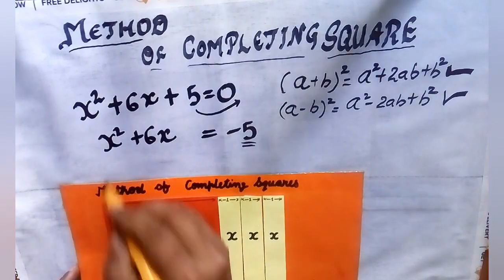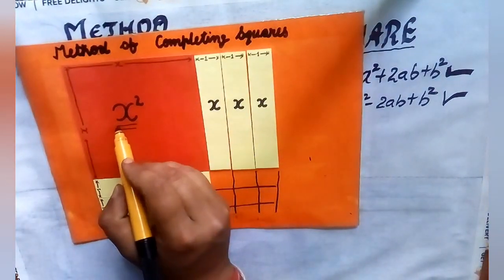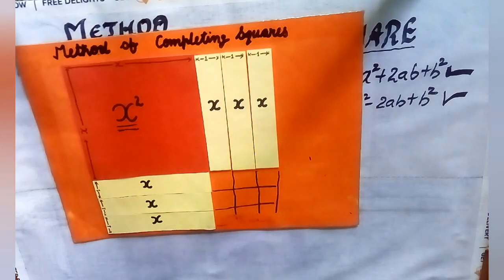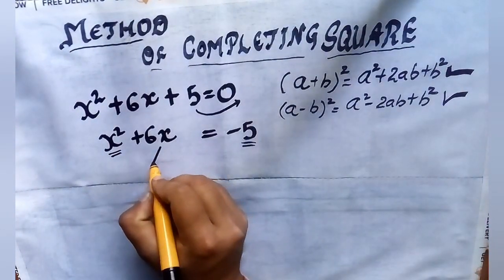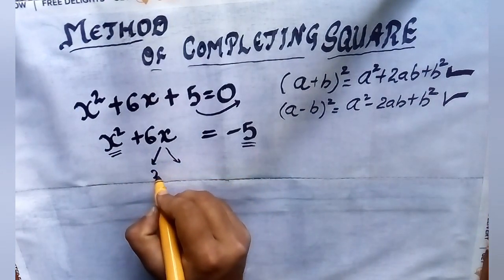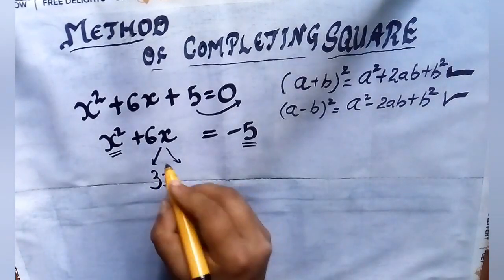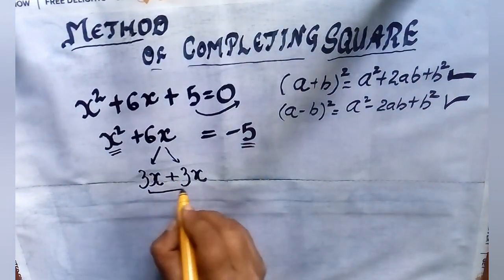You can see in the red color — I took a square whose side is x and its area equals the first term, that is x². Now the second term of the equation is 6x, so I divided it into two equal parts: 3x + 3x. Let us see why I divided it on the figure.